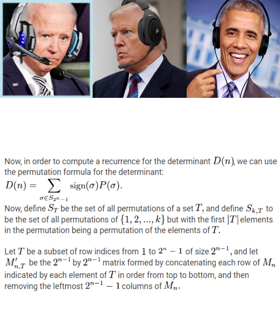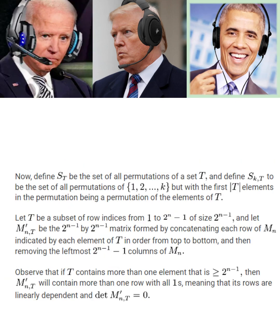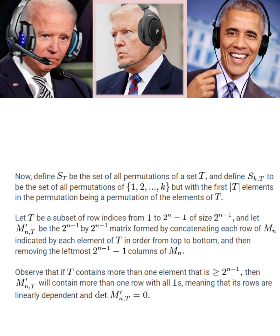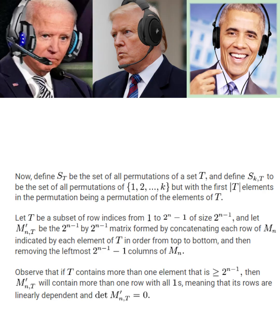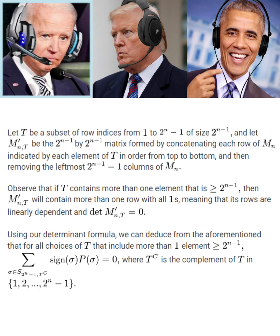We can observe that if T contains more than one element that is greater than or equal to 2 to the N minus 1, then M prime sub N comma T will contain more than one row with all ones. Now Trump, what does this imply? Does it mean that the rows of M prime sub N comma T are linearly dependent? Yes, that's correct. Consequently, in that case, the determinant of M prime sub N comma T equals 0. And using our determinant formula, we can deduce that for all choices of T that include more than one element that is greater than or equal to 2 to the N minus 1, the sum over all permutations sigma in S sub 2 to the N minus 1 comma T complement of the quantity sine of sigma times P of sigma equals 0.